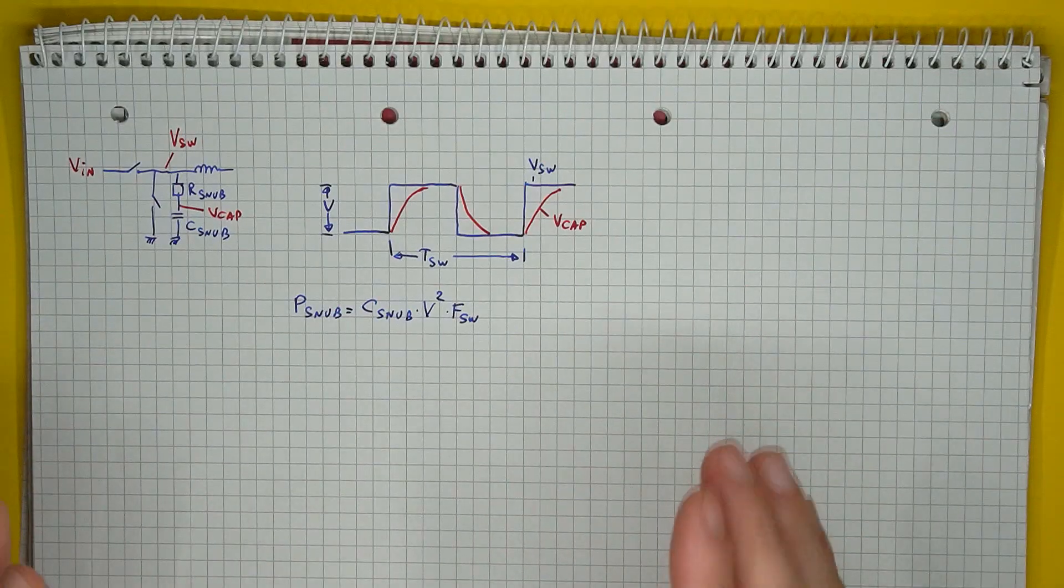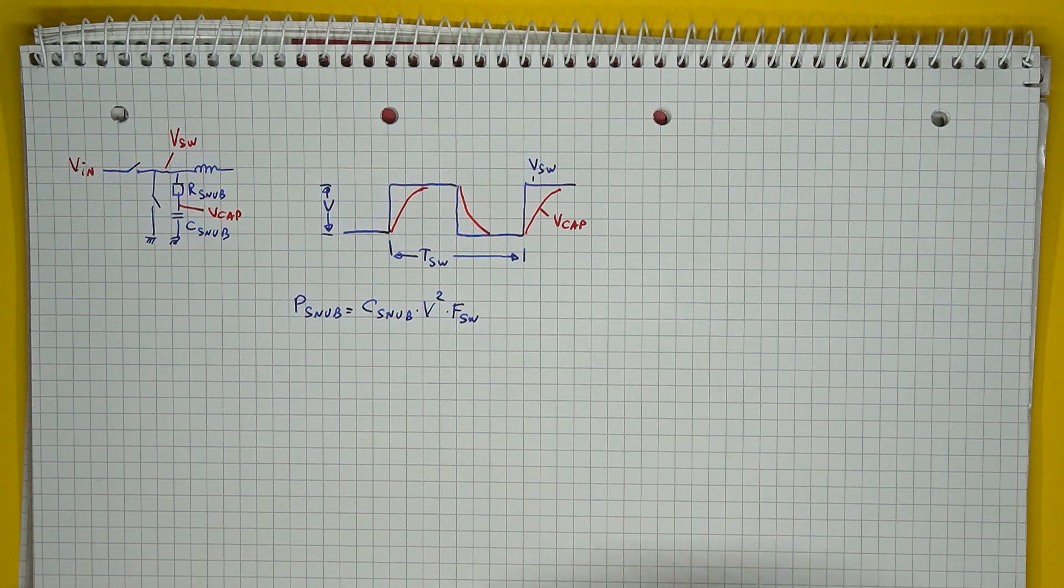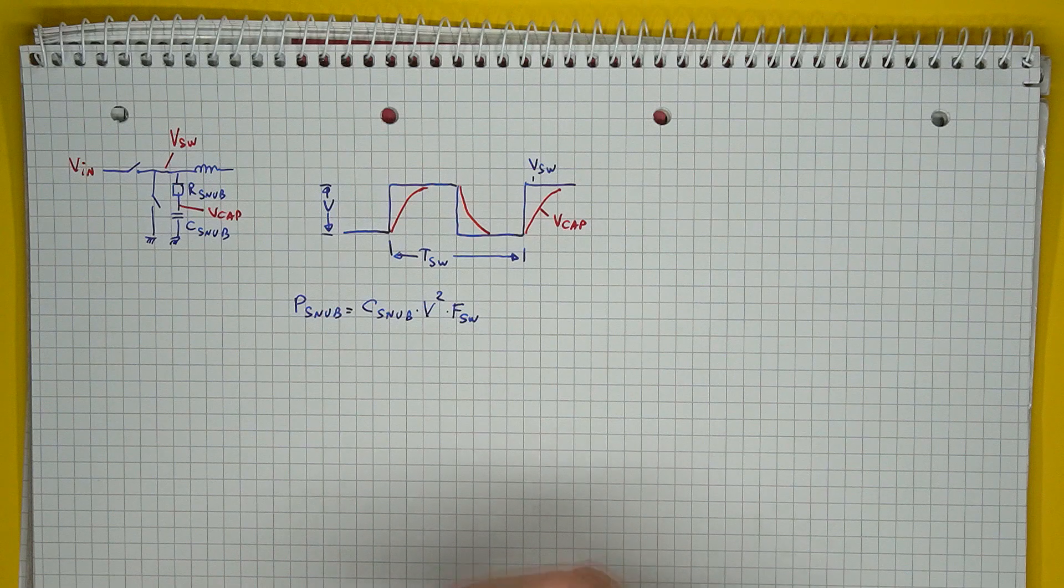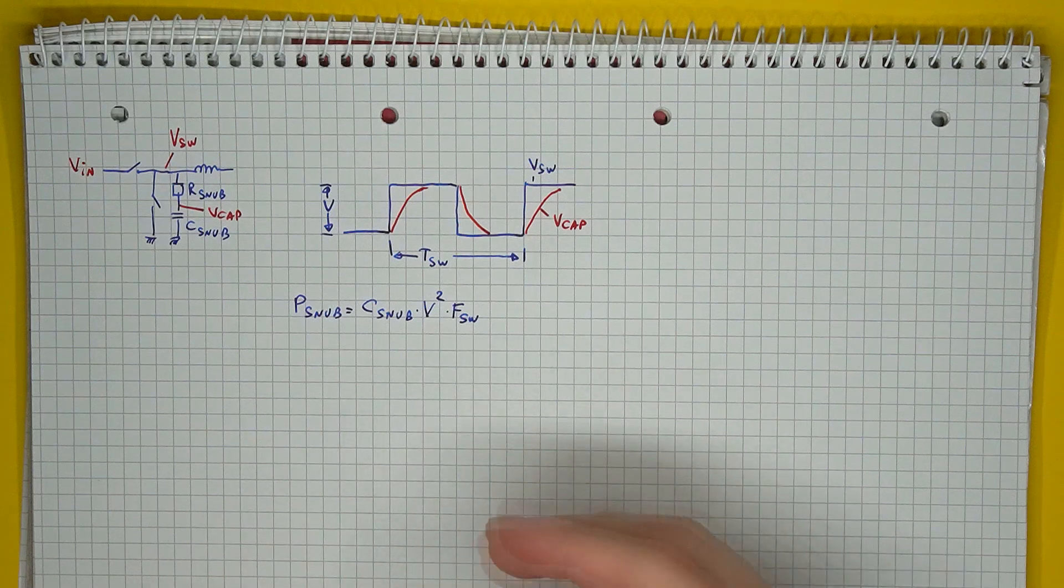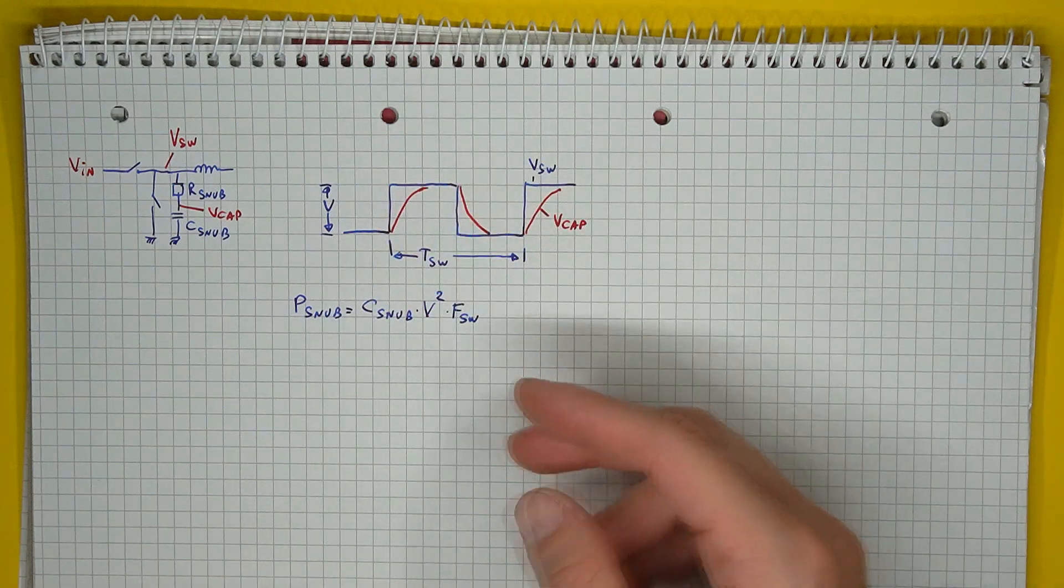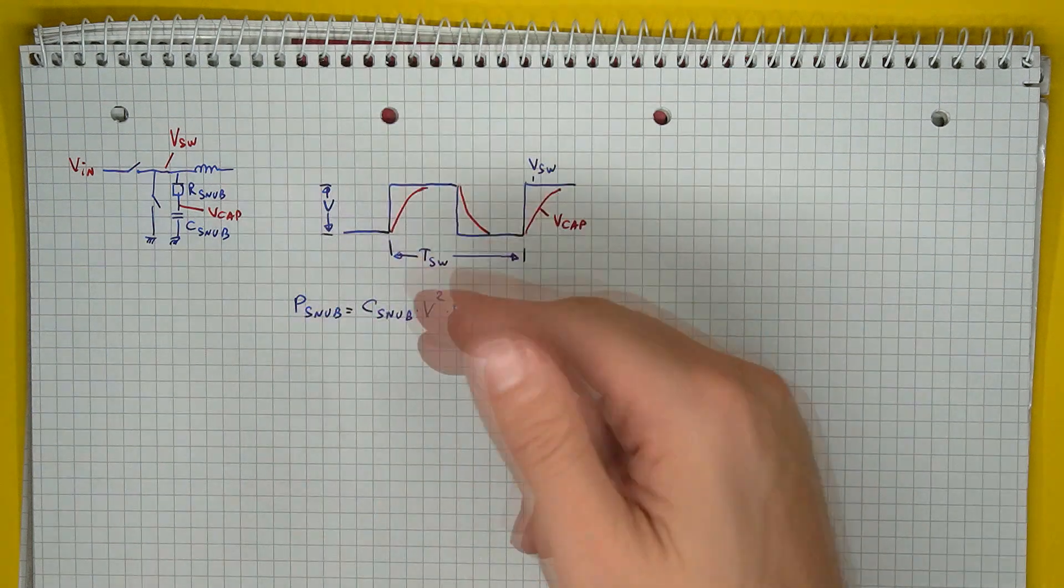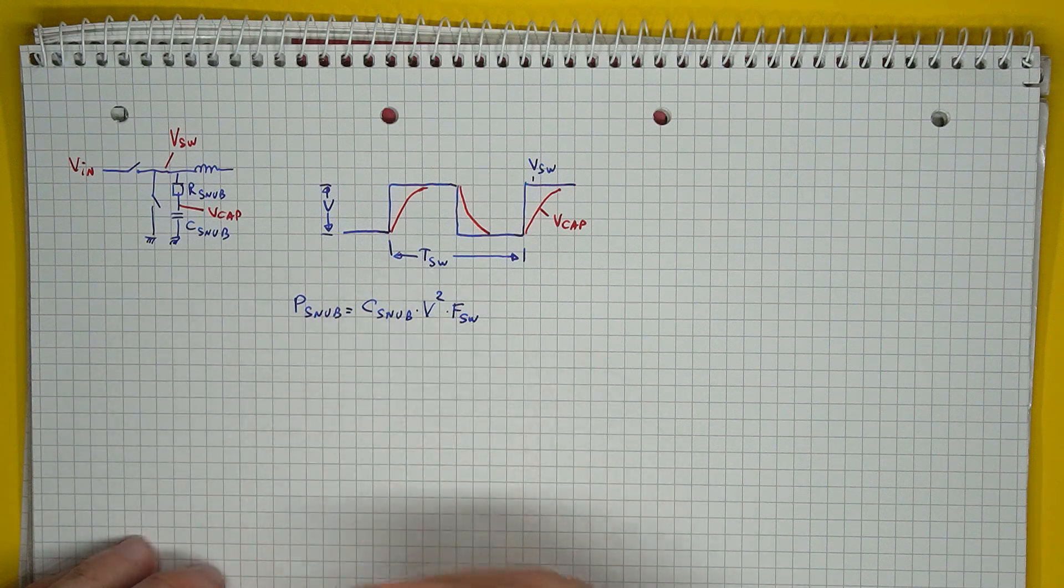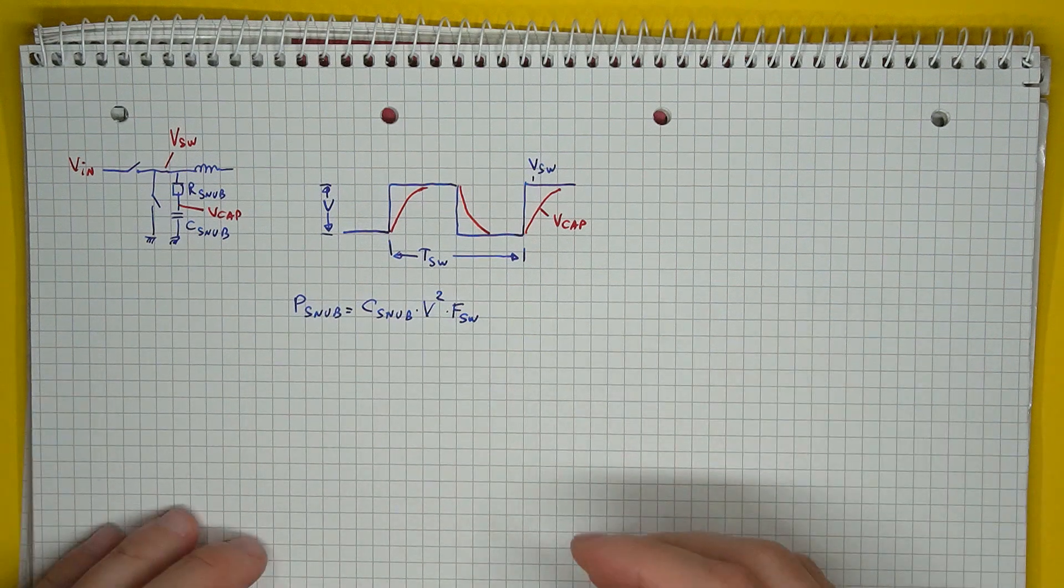Last thing to discuss today is the exact components for the snubber circuit. What sort of parameters should you be keeping in mind when choosing the resistor and capacitor? So there are a few observations and assumptions to be made here. First of all, the voltage on the snubber capacitor will have enough time to reach the two voltage extremes that appear in the switching node during a switching cycle.